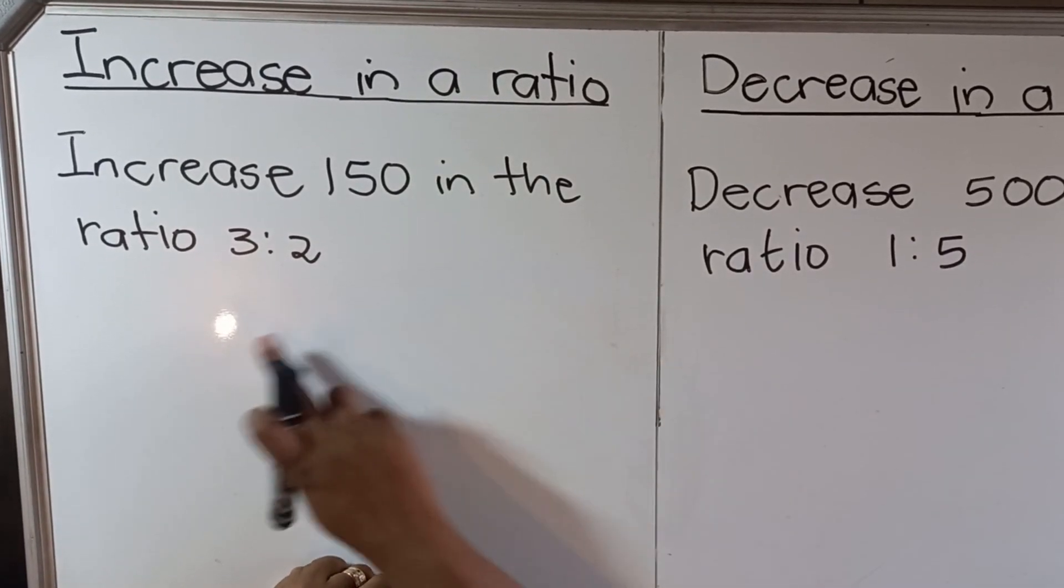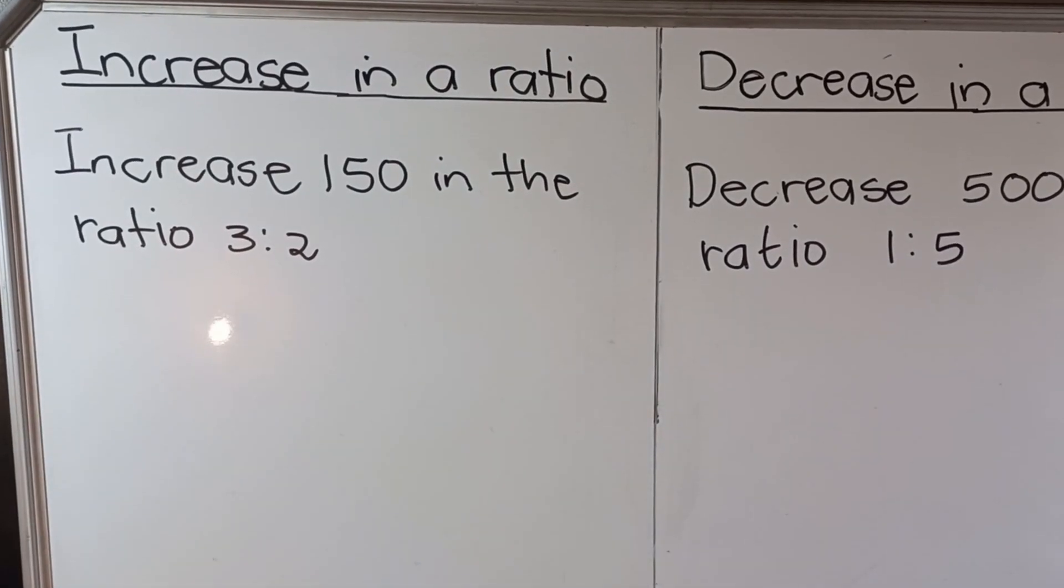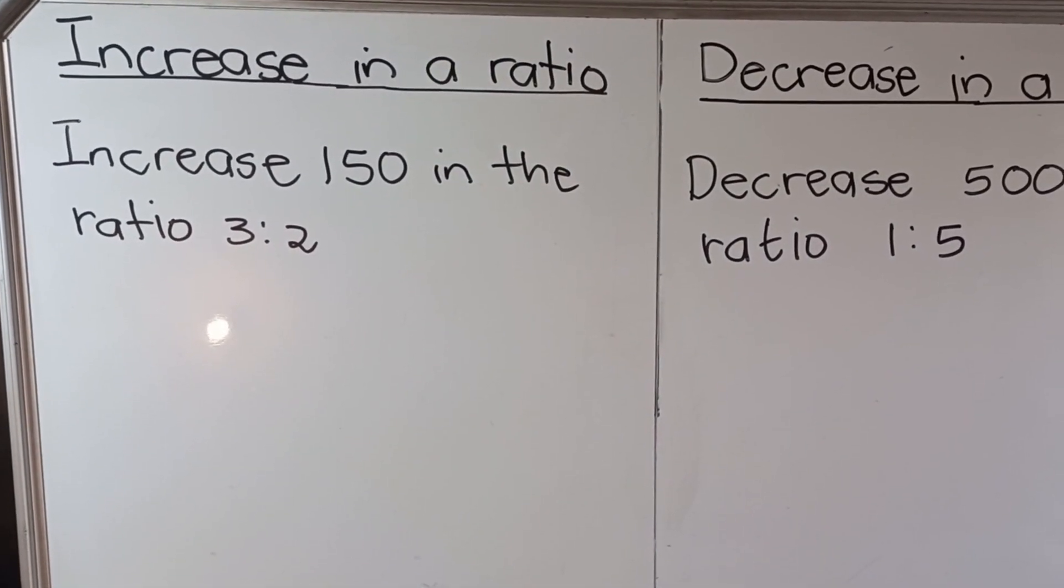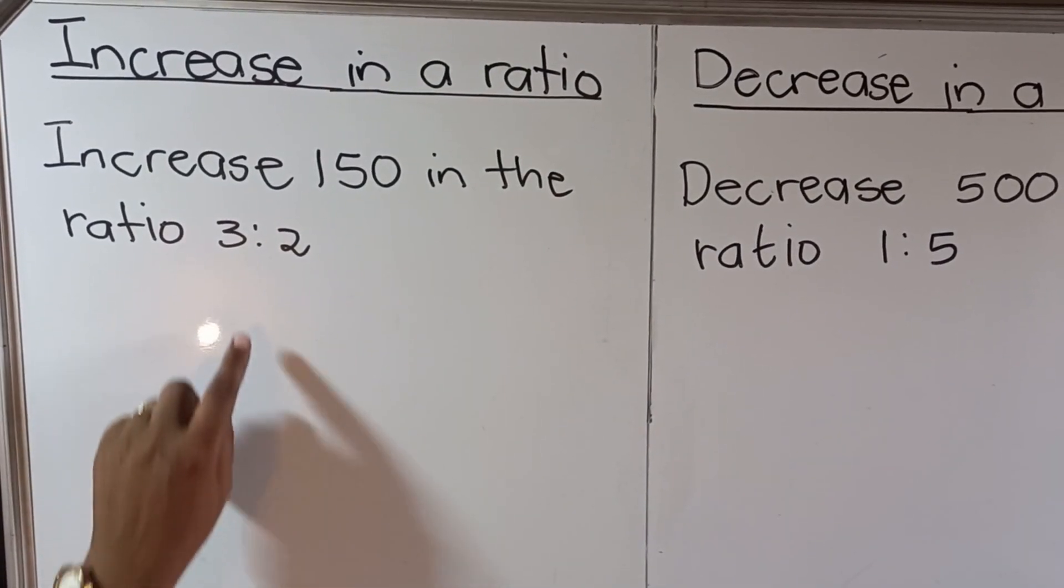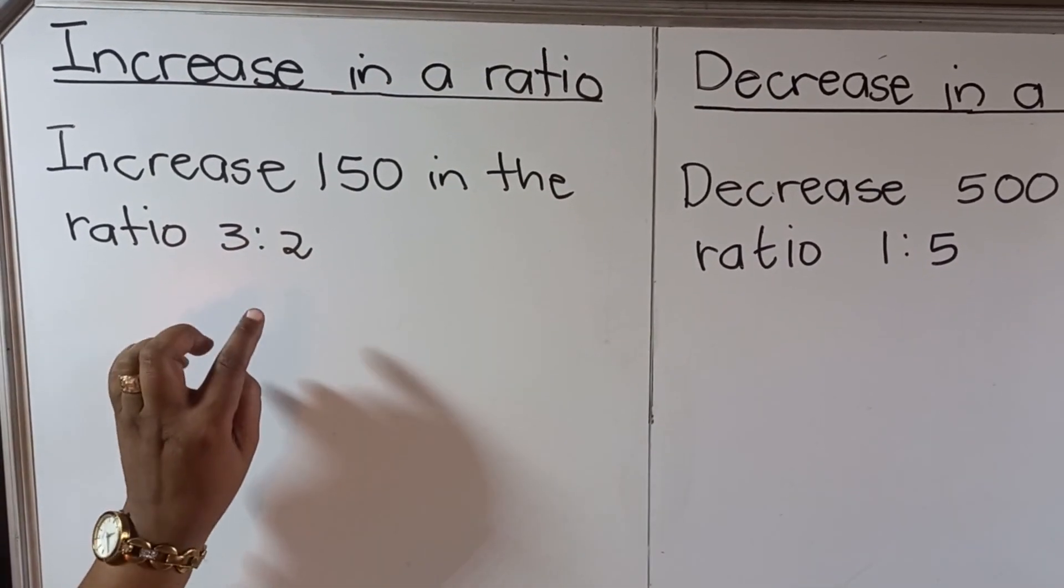150 in a ratio 3 is to 2. So when they say increase in a ratio, you look at the ratio 3 is to 2. You write the ratio as a fraction. The bigger number you write it on top and the smaller one becomes a denominator.